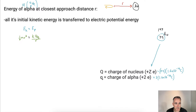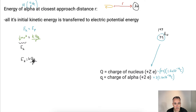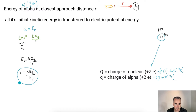If we leave the initial kinetic energy as EK and solve for R, we rearrange to get R equals K times big Q times little q over EK. This is the equation for the distance of closest approach, where EK is the initial kinetic energy.